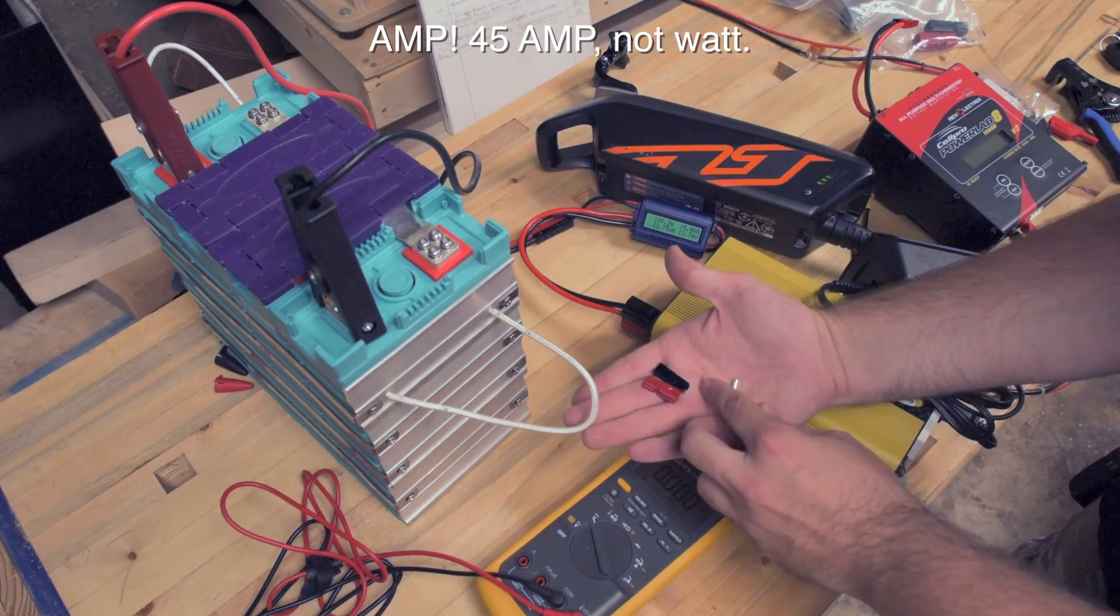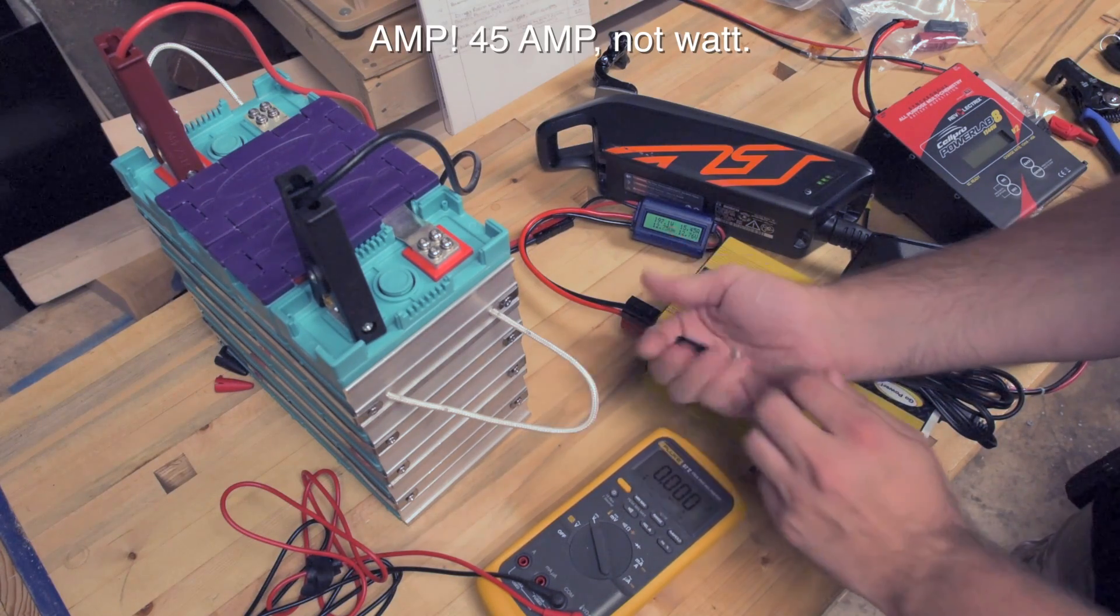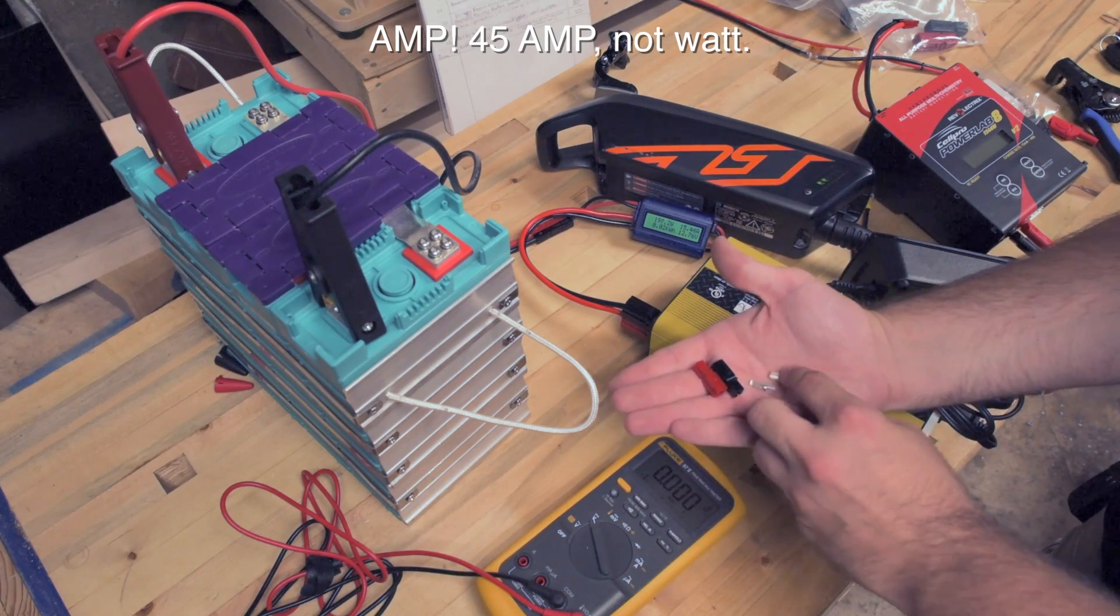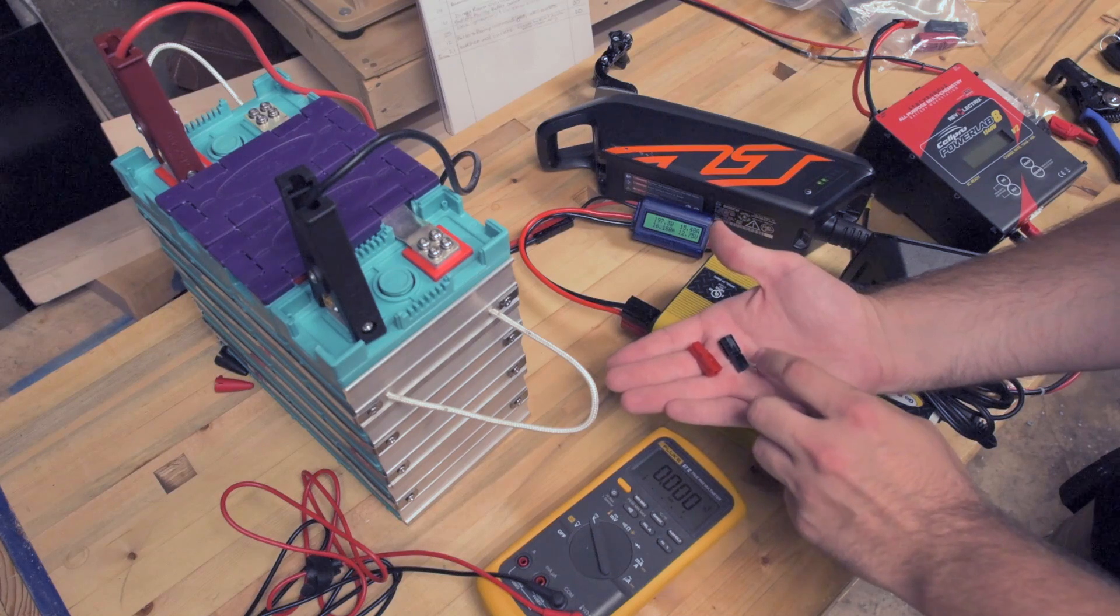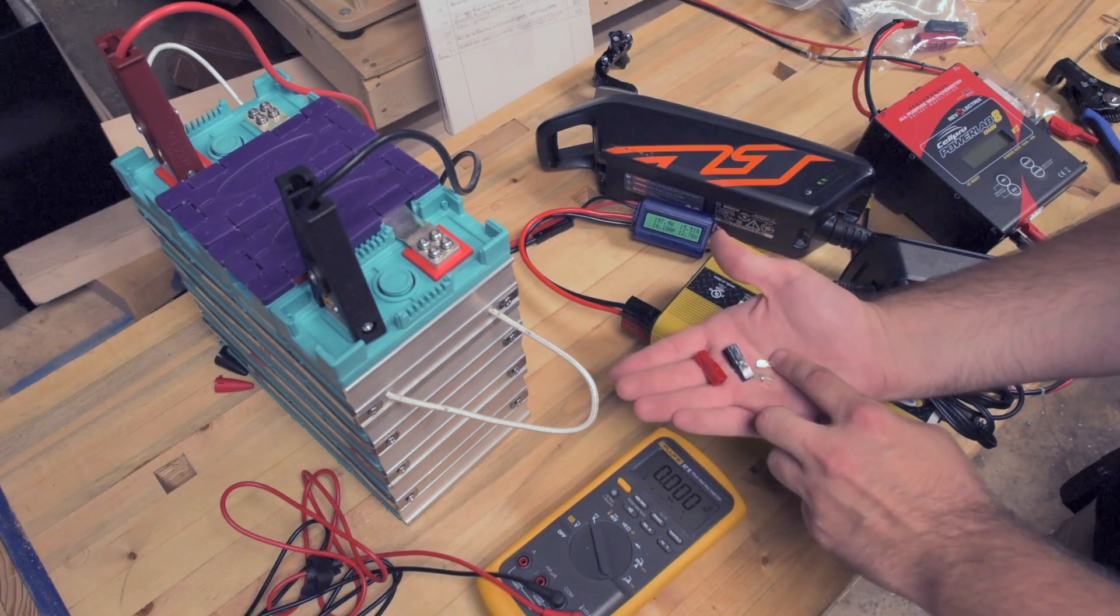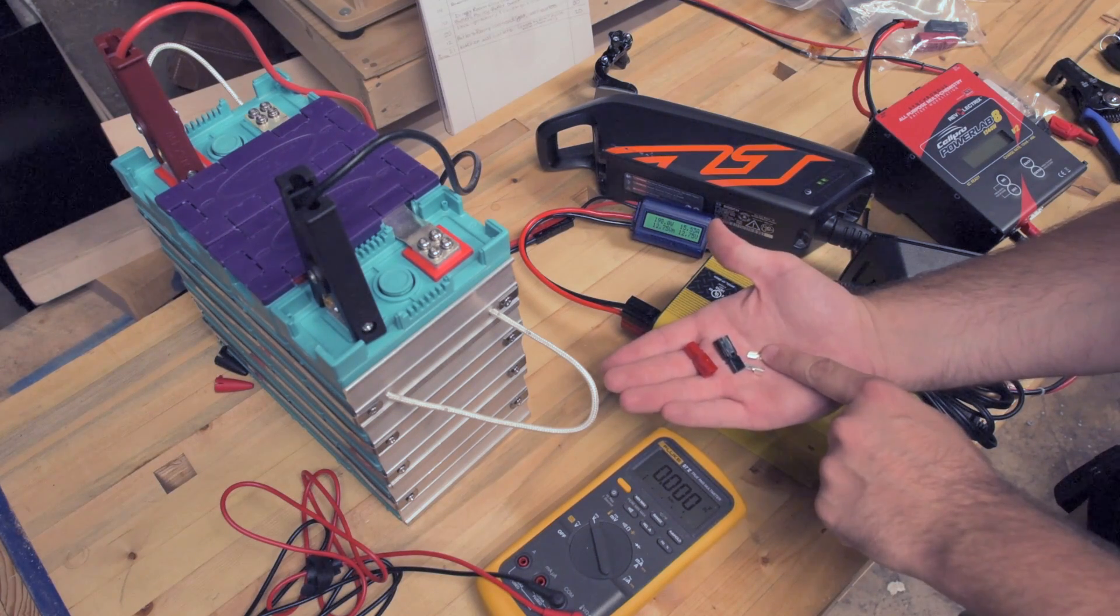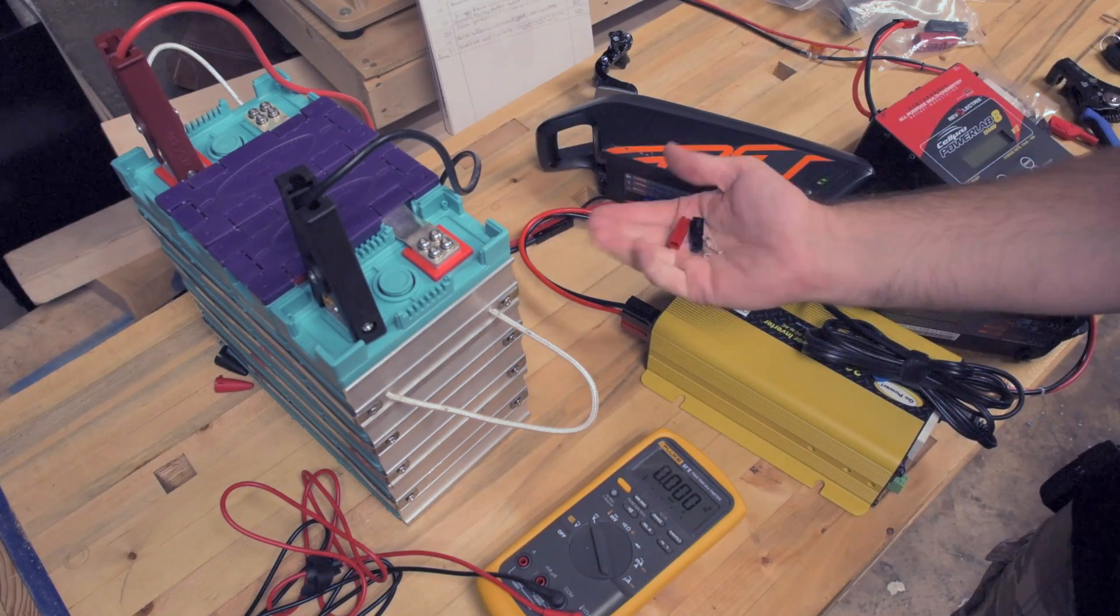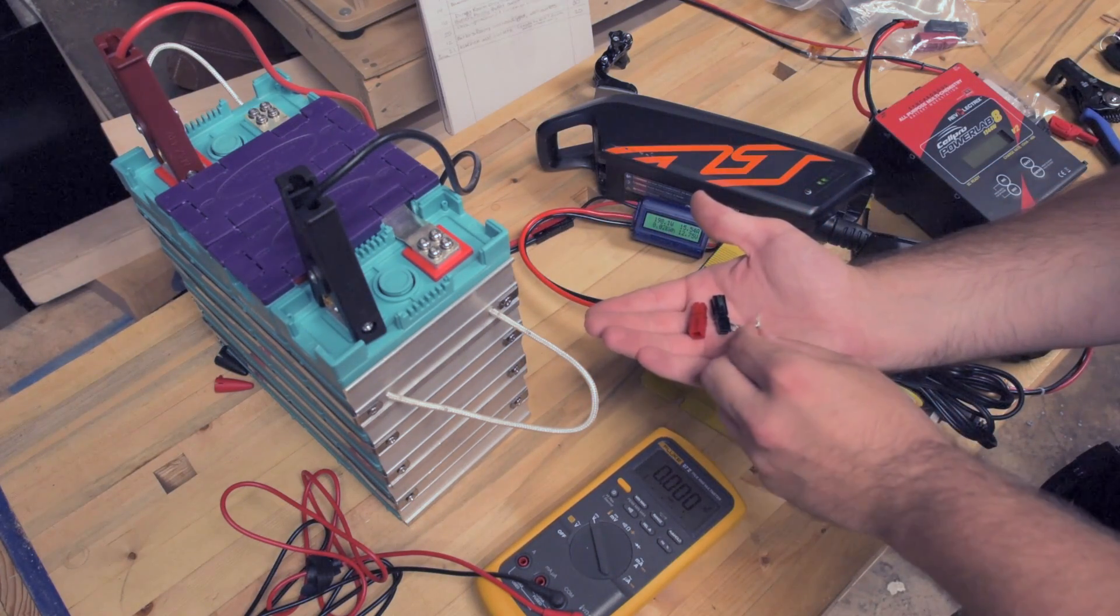For this, I use these 45 amp Andersen connectors. I usually use 30 amp Andersen connectors for just about everything, but since this CellPro PowerLab 8 is capable of slightly higher amperage than my normal projects, I decided to use these 45 amp connectors. Plus these 45 amp connectors will crimp onto 10 gauge wire, which is what I'm using right here, and the 30 amp connectors won't.